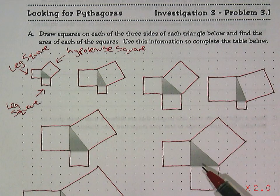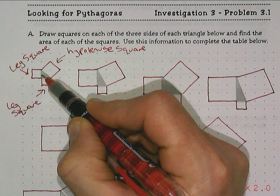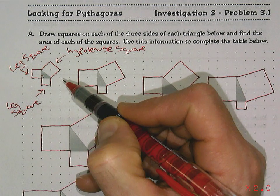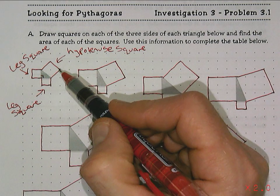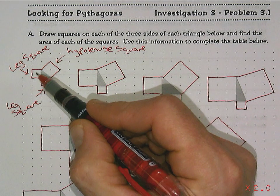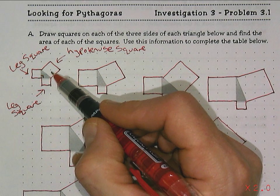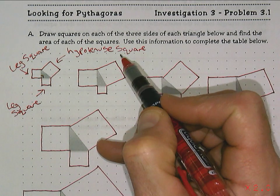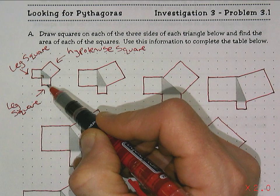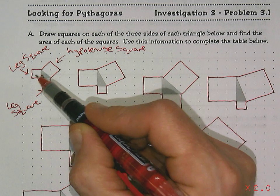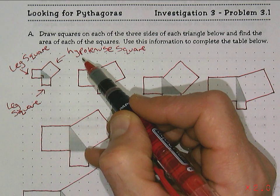Before we do that, make sure to understand there are three sides to the right triangle. There's a right angle right in here. I've already drawn the squares off the sides, but in this right triangle there are three different sides. Two of them are called leg sides, and the longest side of the right triangle is called the hypotenuse side. Every right triangle has two legs and a hypotenuse.